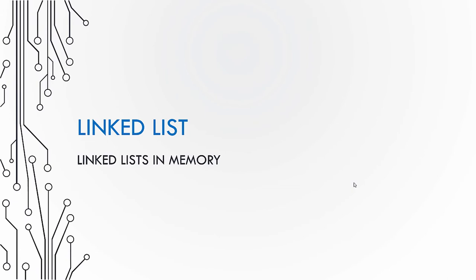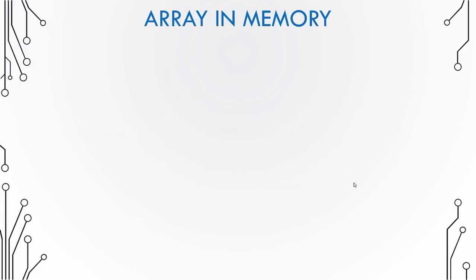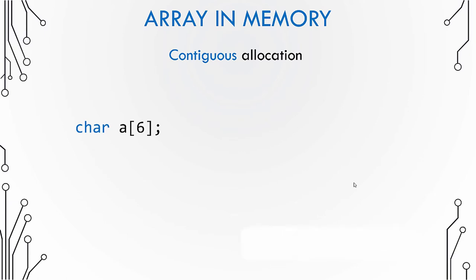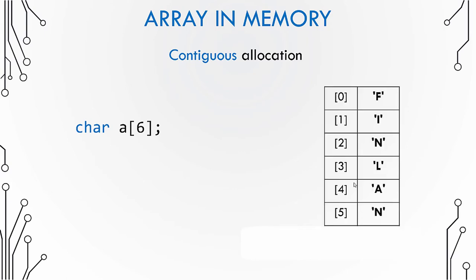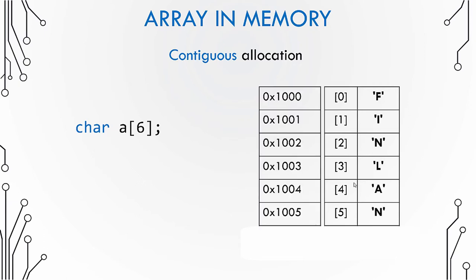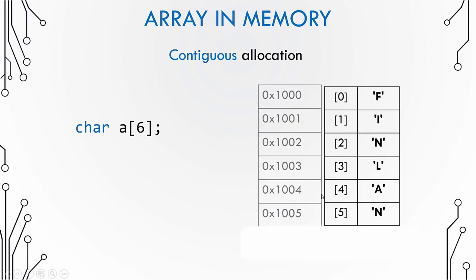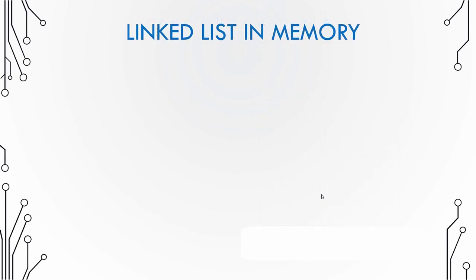Let us talk about how linked lists are organized in memory. Arrays are allocated continuously — when you declare an array, the compiler allocates a block of memory corresponding to the array size. For a character array of six elements, addresses would be 1000, 1001, 1002, and so on. In contrast, elements of a linked list are not allocated continuously — they are allocated randomly.